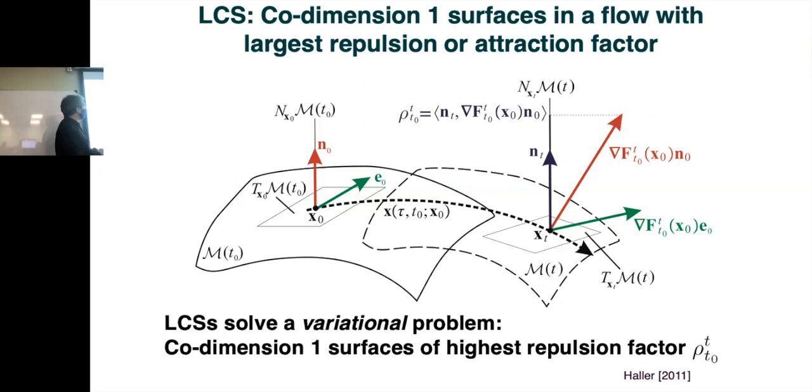And the LCS, they solve a variational problem. We don't really have to get into the details, but they're finding the surfaces of the highest repulsion factor. So they're the most influential in terms of pushing things away if you go in forward time or bringing things together in backward time. We tend not to actually calculate the variational problem. There's some diagnostic tests we can do.